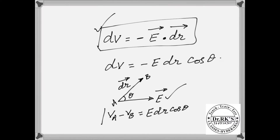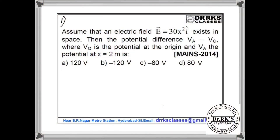So we can write Va minus Vb equals E·dr·cos θ. Now let us see how questions are asked on the relation between field and potential in JEE or NEET examinations. Field is the negative gradient of potential; the negative sign indicates that in the direction of field, potential decreases. Look at this problem where the electric field E equals 30x² i-cap exists in space.